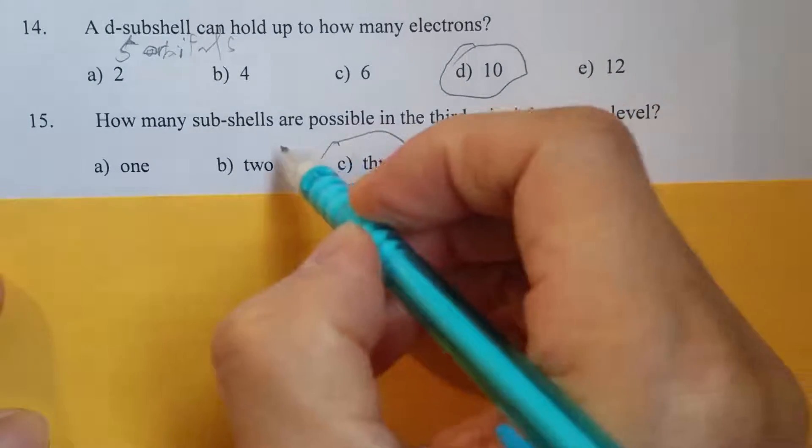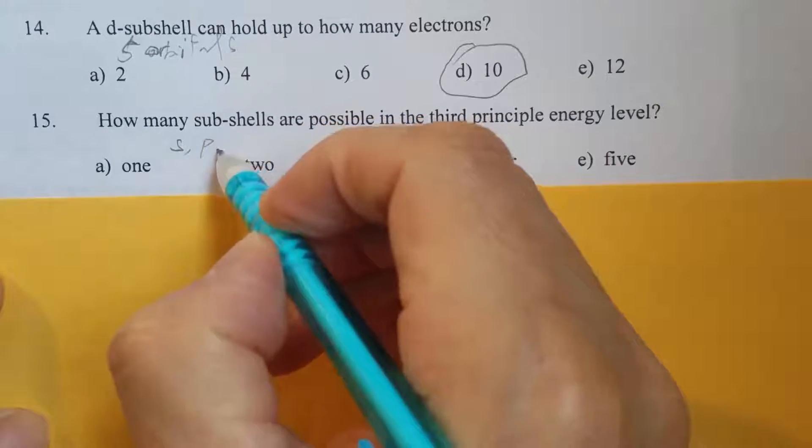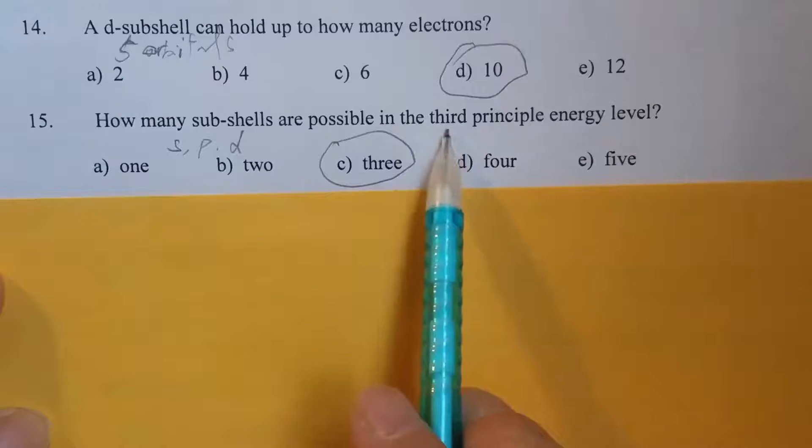And these three, as I just mentioned, s, p, and d. So that's these three subshells. Because n equals 3.